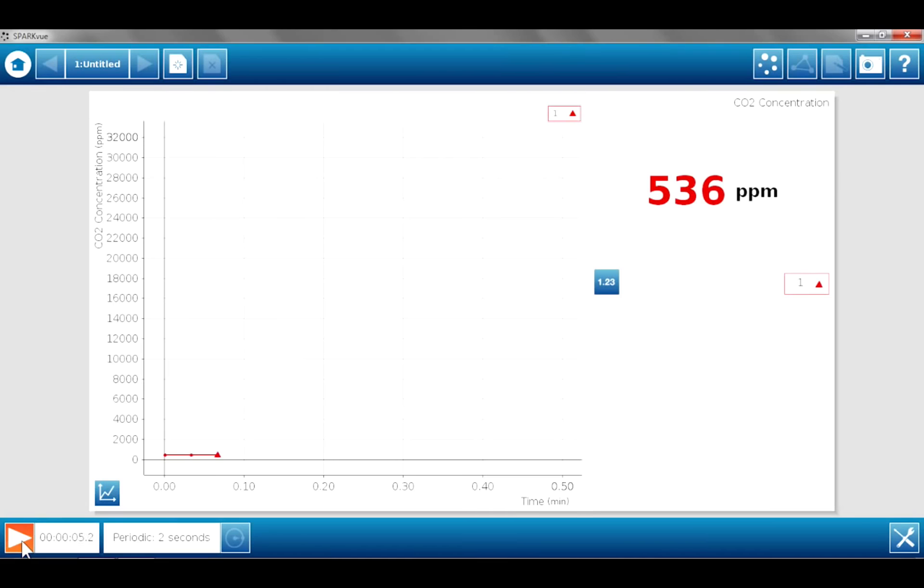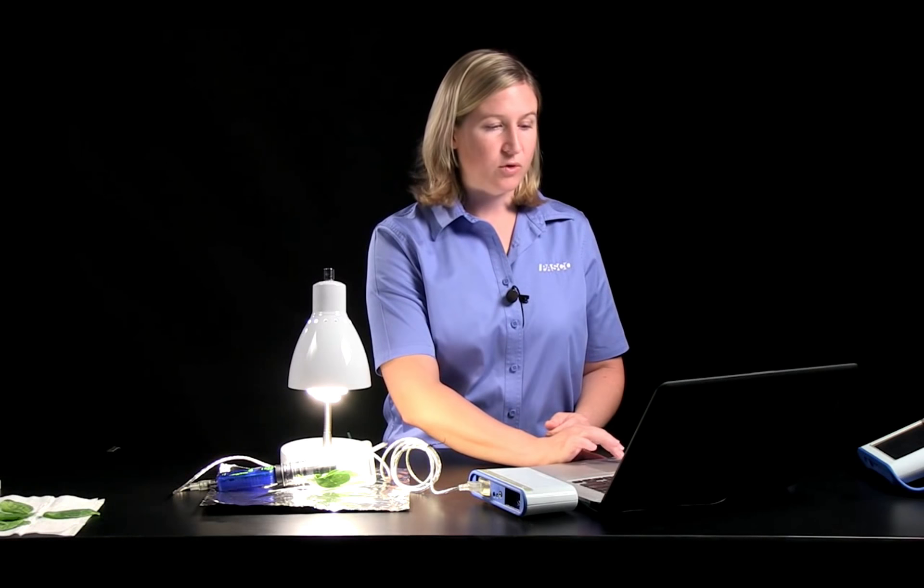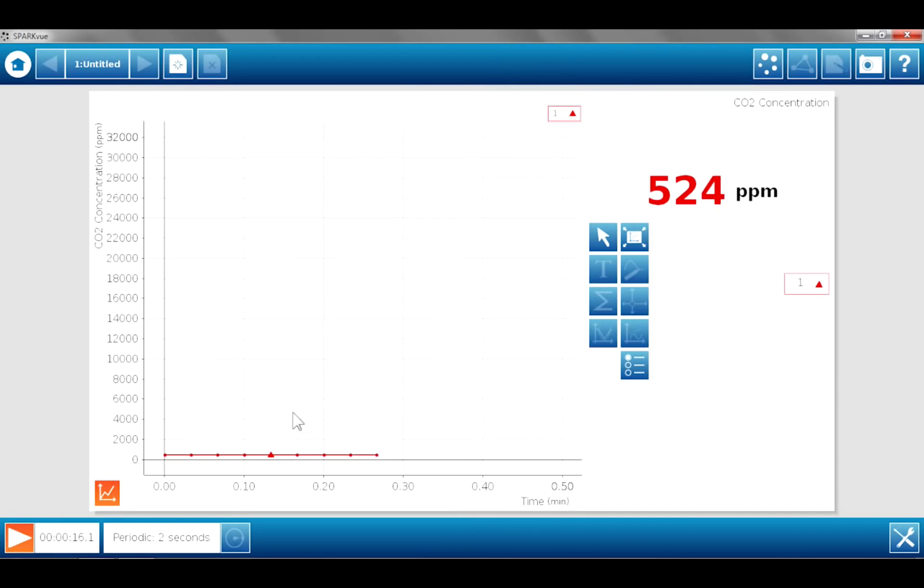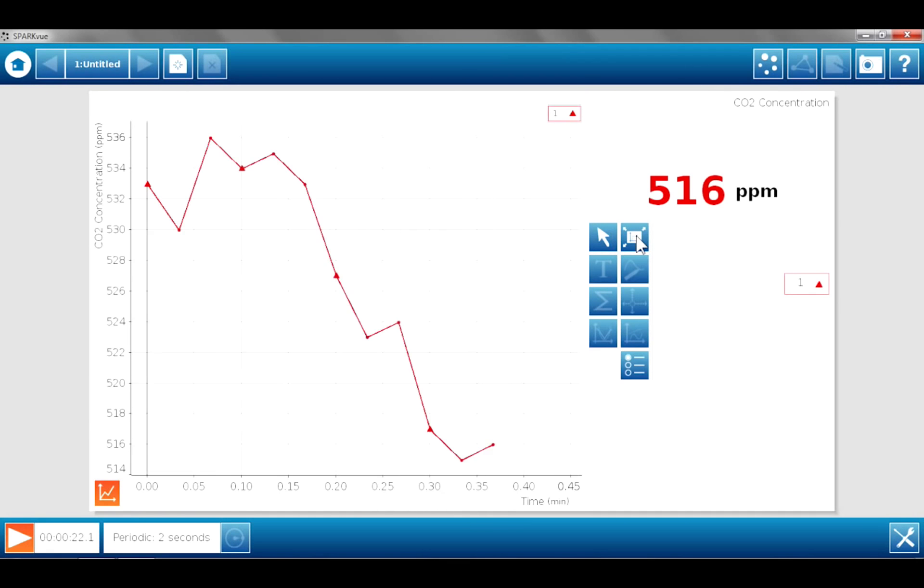When we're ready to collect data, we're just going to hit the play button to begin data collection. Now you can see a few data points being collected near the axis of the graph there. We're going to want to scale the axis to be able to see the greatest view of our change in carbon dioxide concentration for the bottle. So I open up the graph tools, and I'm going to choose the scale axis button.